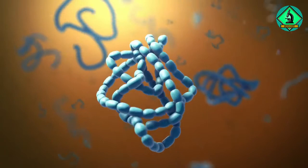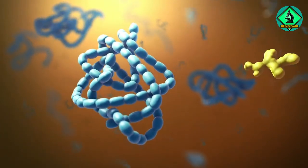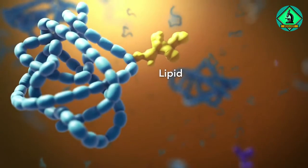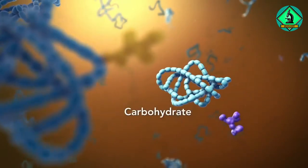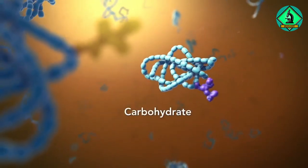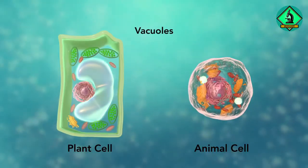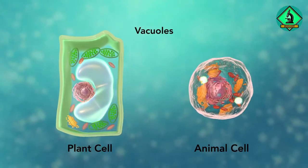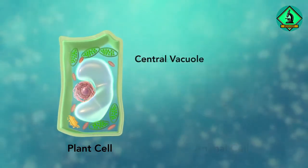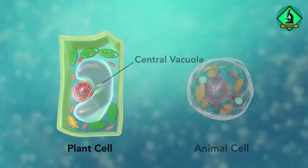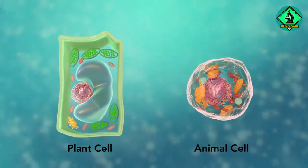The Golgi body does this by folding the proteins into usable shapes or adding other materials onto them such as lipids or carbohydrates. Vacuoles are sac-like structures that store different materials. Here in this plant cell, the central vacuole stores water.